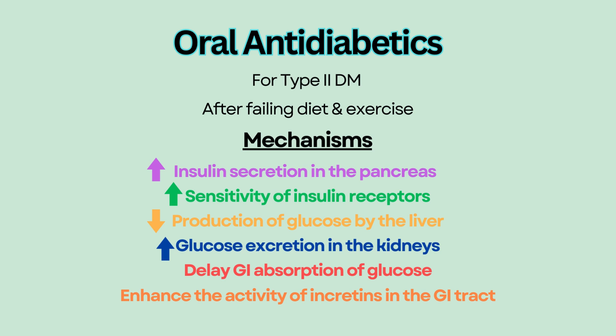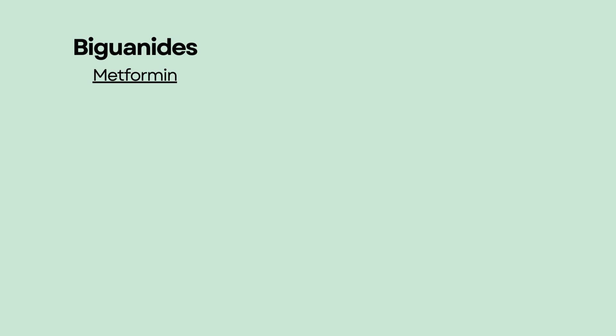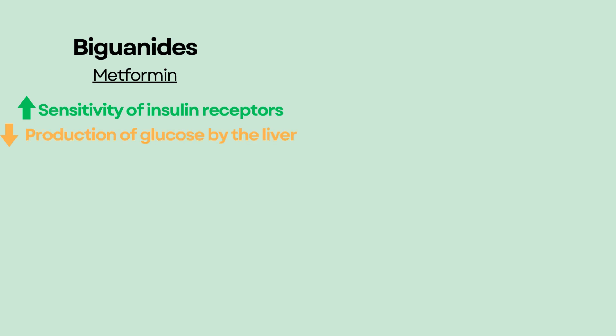The first type is biguanides, and metformin is the most famous one. Metformin increases the sensitivity of insulin receptors and decreases the production of glucose by the liver. It is commonly prescribed as a first-line anti-diabetic agent, especially in elderly patients, because it has less cardiac side effects.